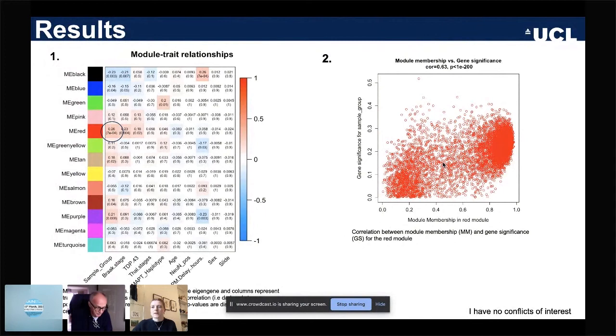For this red module, correlation between module membership and gene significance was quite high. This means that genes with high module membership in this red module are potentially relevant for PSP.